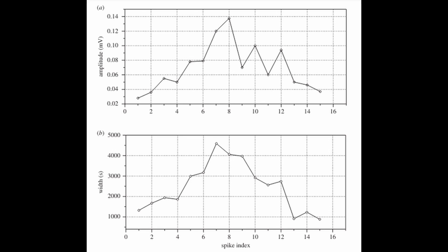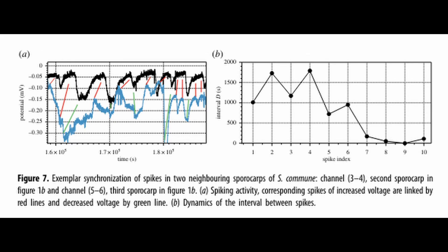Implications. The implications of these findings are profound. It could suggest a new understanding of communications. This study suggests that communication through electrical signals is not exclusive to organisms with nervous systems. Fungi, despite lacking a nervous system, might use similar mechanisms for internal communication.